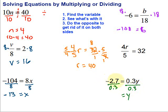Then negative 2.7 divided by 0.3. A negative divided by a positive again. That's going to be a negative. And 2.7 divided by 0.3 is 9. So y equals negative 9. Alright.